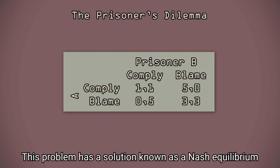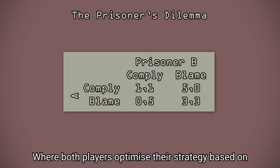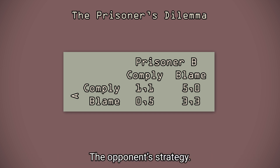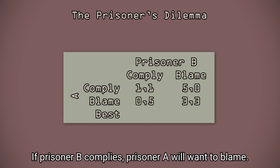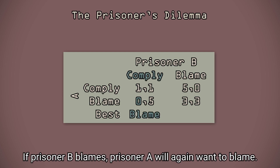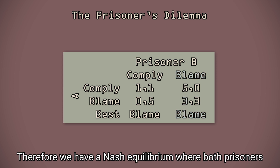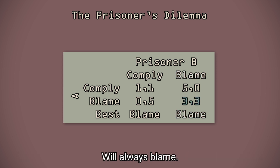This problem has a solution known as a Nash Equilibrium, where both players optimize their strategy based on the opponent's strategy. If prisoner B complies, prisoner A will want to blame. If prisoner B blames, prisoner A will again want to blame. Therefore, we have a Nash Equilibrium where both prisoners will always blame.